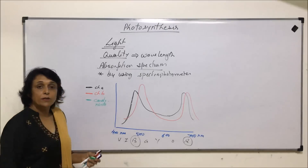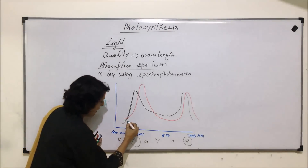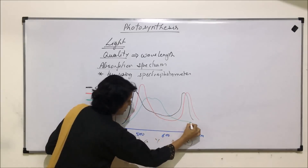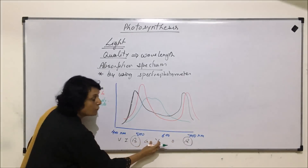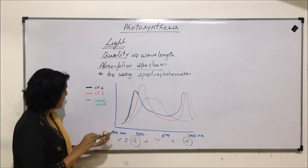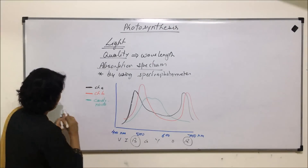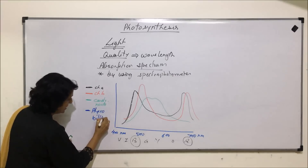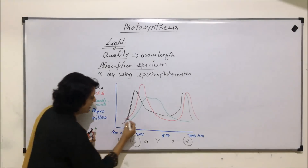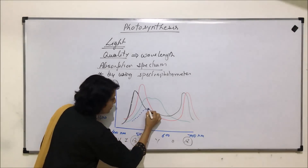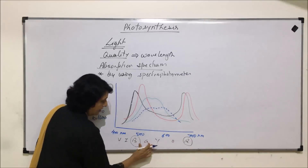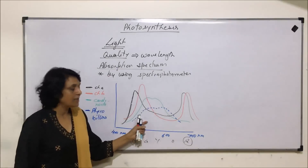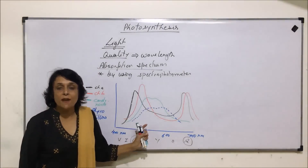The third pigment group is carotenoids. Carotenoids showed absorption somewhere near the green and yellow region. Similarly, phycobilins also showed a peak in the green and yellow region. This graph tells us which pigment is absorbing which particular wavelength.